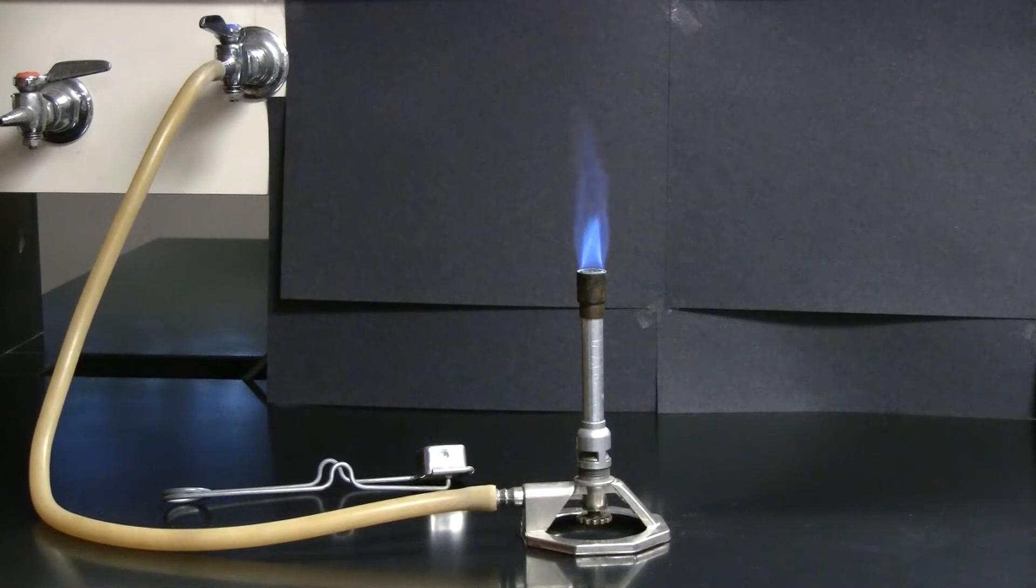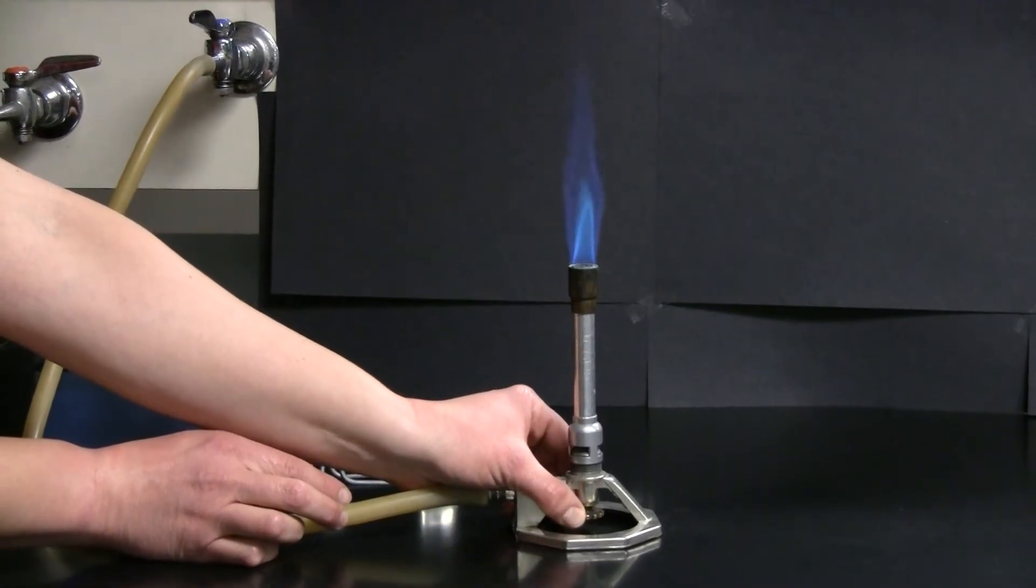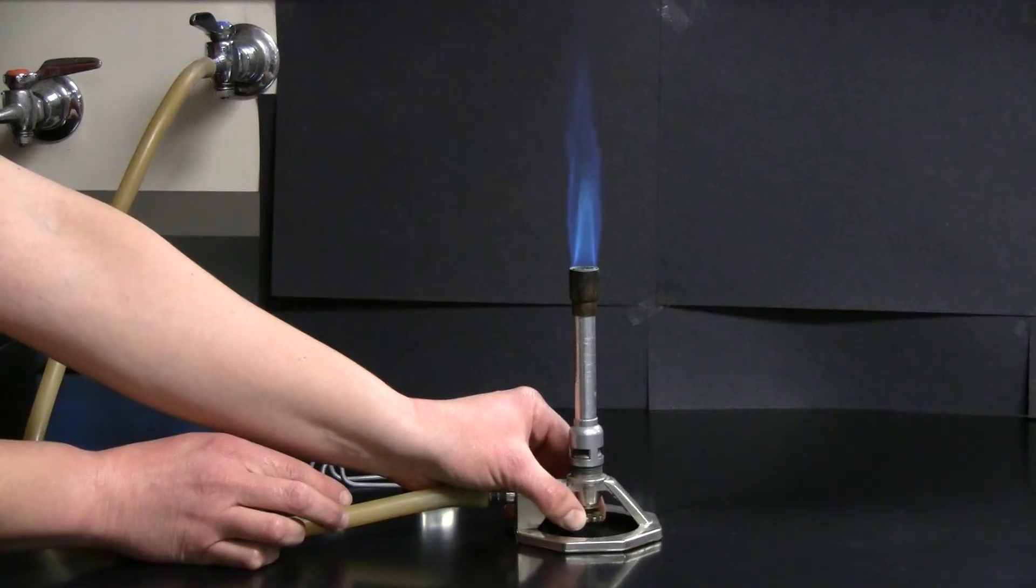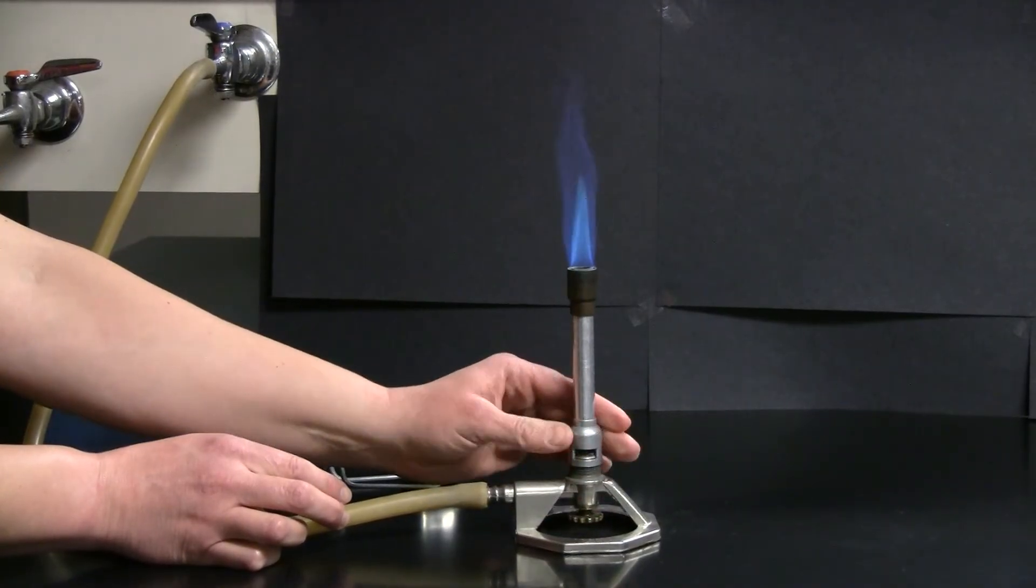If you want to make the flame larger, use the gas inlet valve at the bottom to increase the amount of gas. You may need to also adjust the air inlet valve to get that good strong sputtering flame.